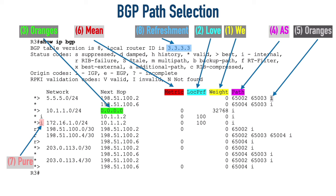There are a few other things in that left-hand column worth noting. The star simply means this is a valid route. In some places we have an 'R', which means a RIB - Route Information Base - failure. That sounds bad, but it usually isn't. A RIB failure simply means this route was not taken from the BGP table and injected into the router's IP routing table, perhaps because the router had a better source of that information. And the greater-than sign indicates that of all the routes BGP knows about to get to a particular network, this is the preferred route.